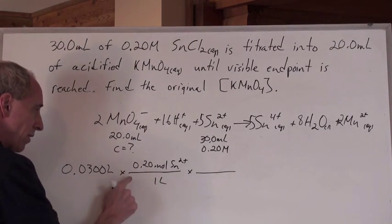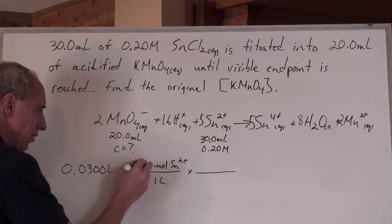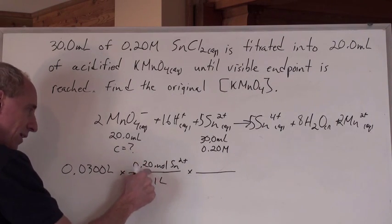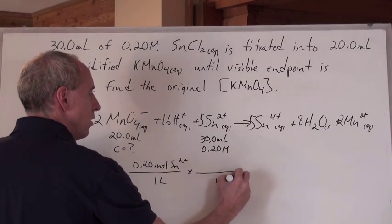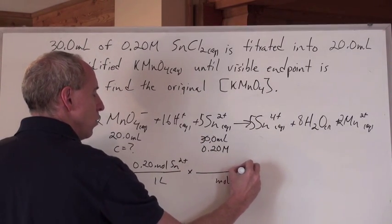Right there, if I stop right there, that calculation gives me the liters cancel, and I've got moles of Sn²⁺. But I don't want moles of Sn²⁺, so you know what I do - I put that in the denominator, and that cancels just like I put that moles per liter so the liters could cancel.